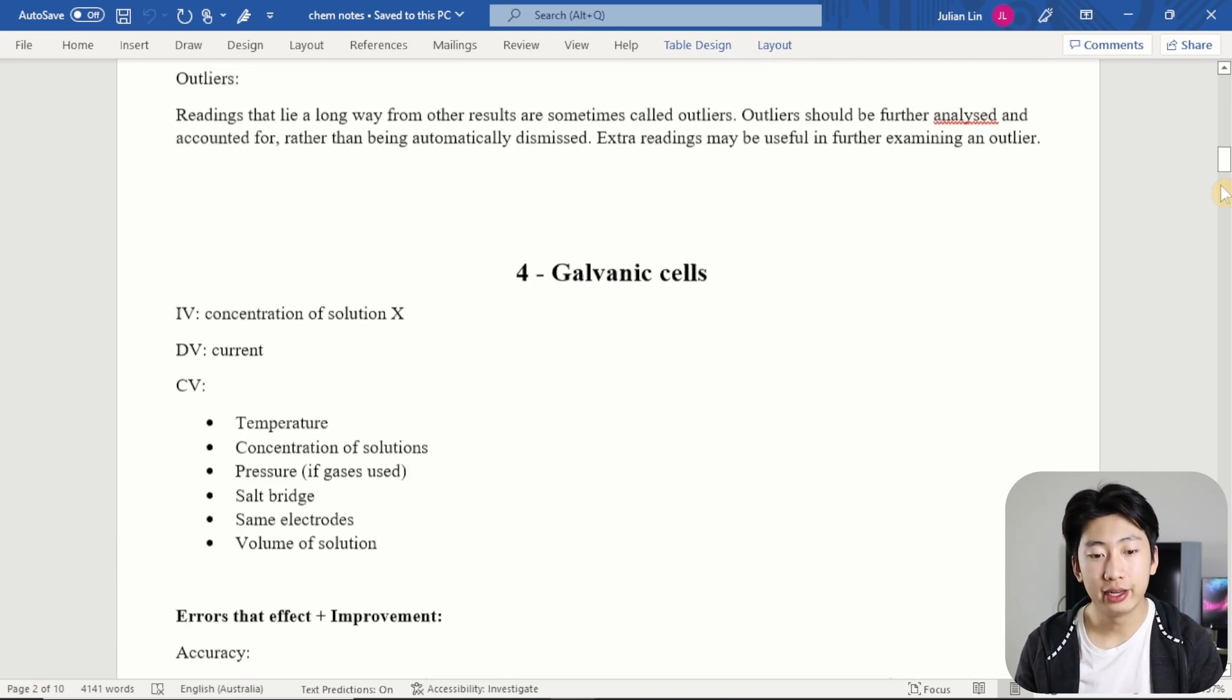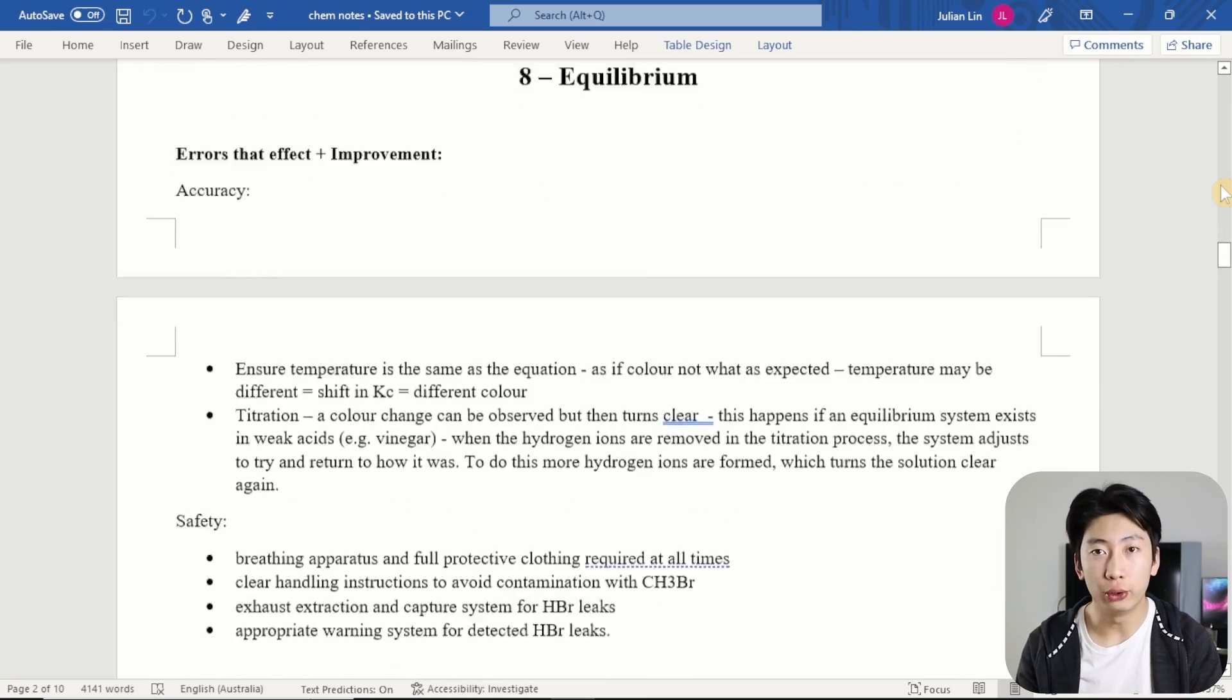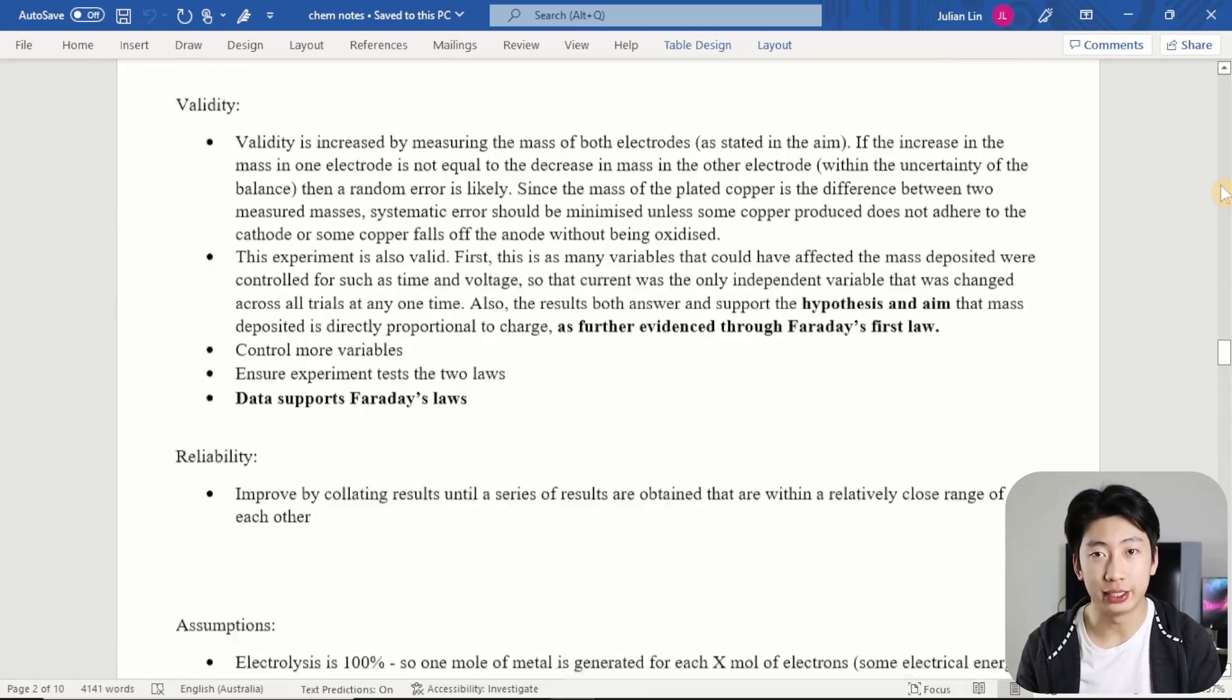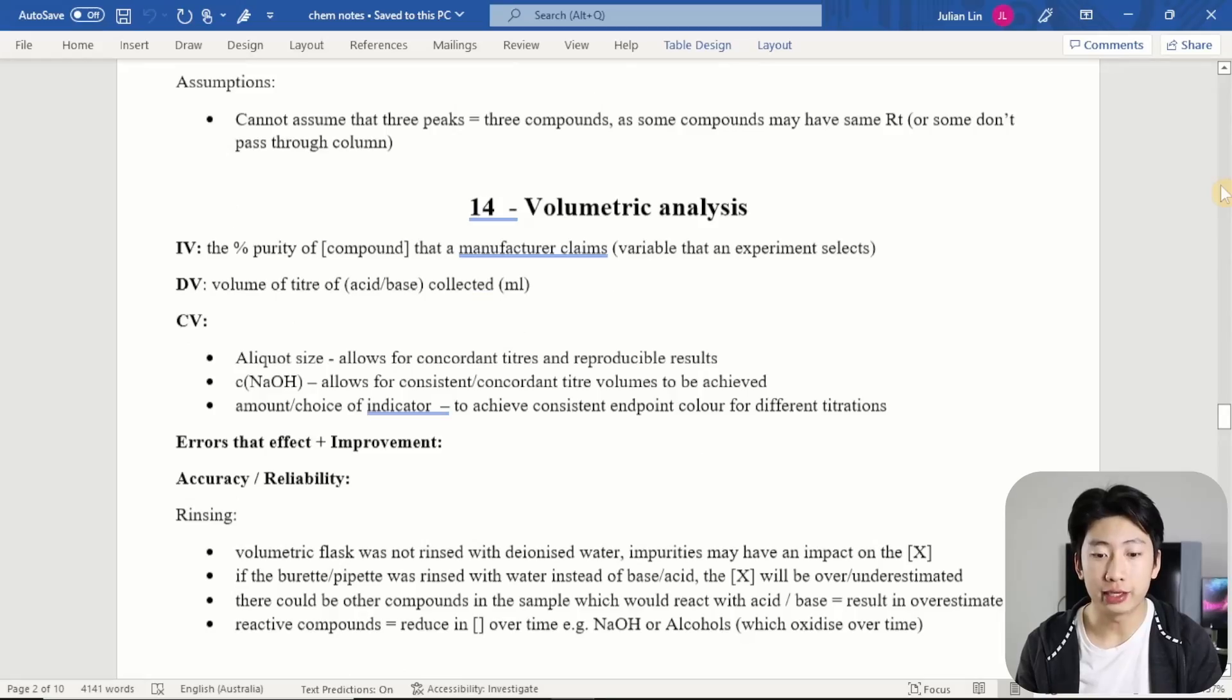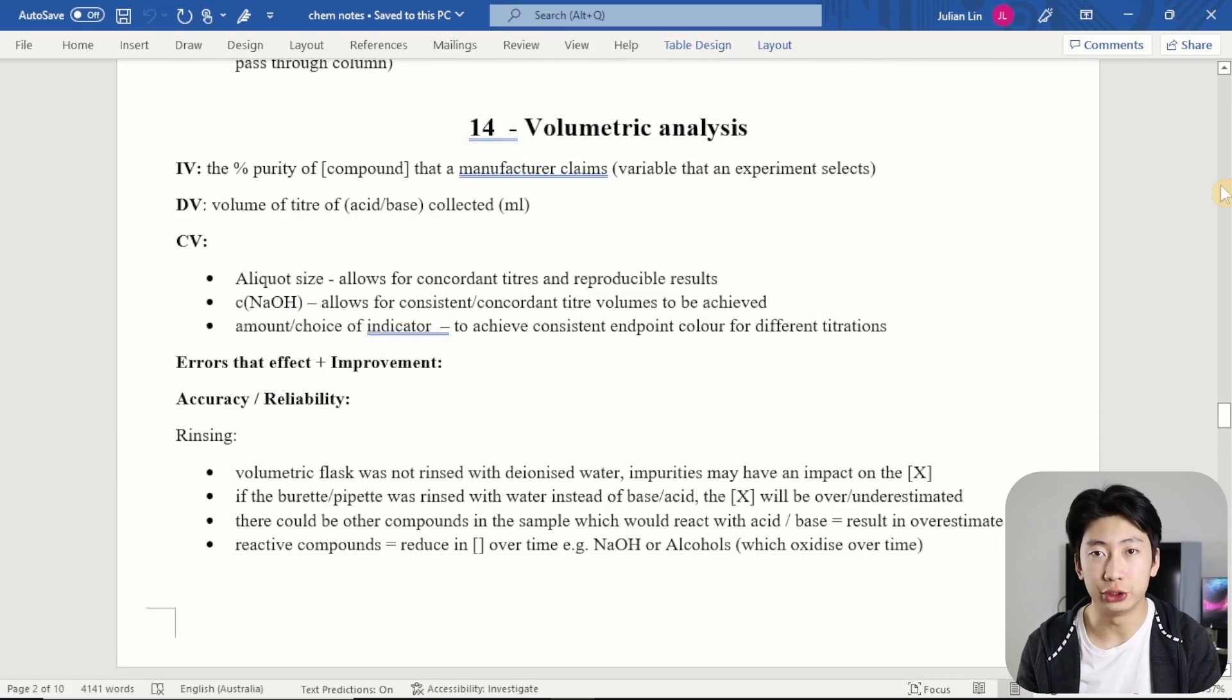And then going below even further, in chemistry we have key topics such as galvanic cells, rates of reaction, all the way down to titrations, etc. And for each topic, I would come up with a mini experiment where I would list out the variables, potential errors, and how we would improve accuracy, validity, precision, all that.